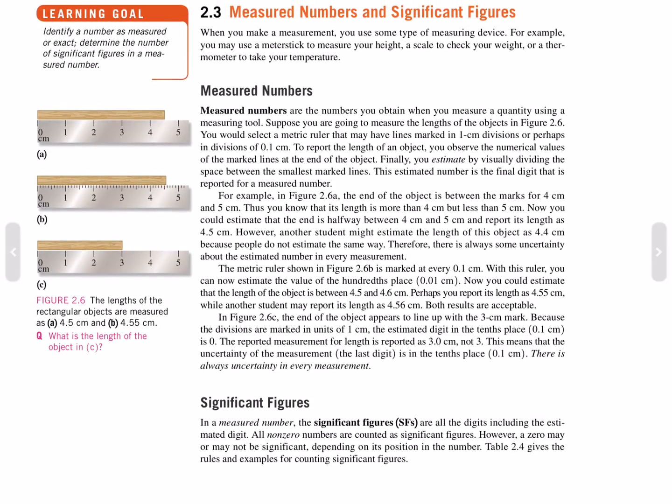Significant figures. In a measured number, the significant figures are all the digits including the estimated digit. All non-zero numbers are counted as significant figures. However, a zero may or may not be significant depending on its position in the number. Table 2.4 gives the rules and examples for counting significant figures.